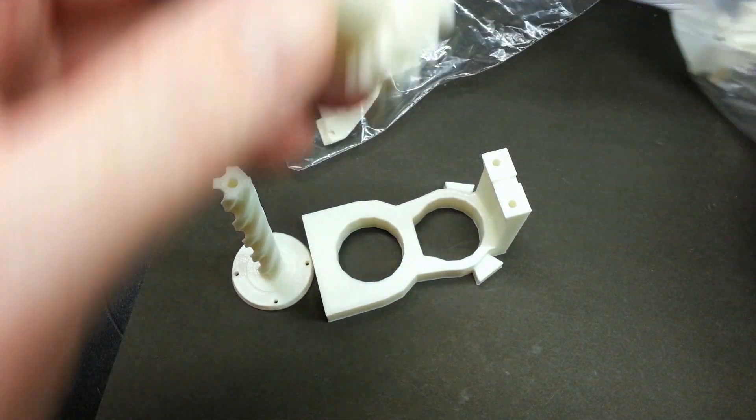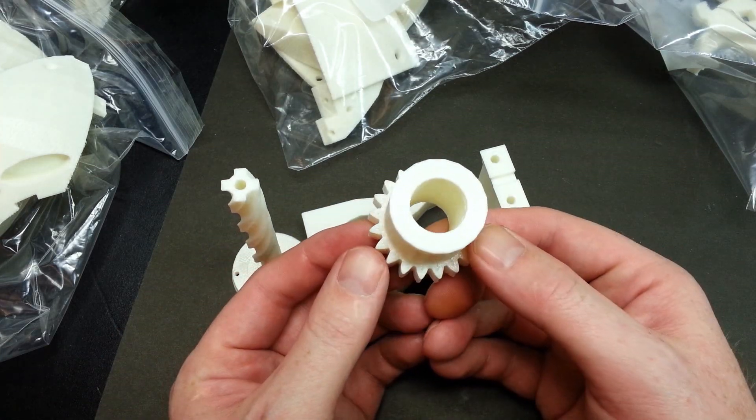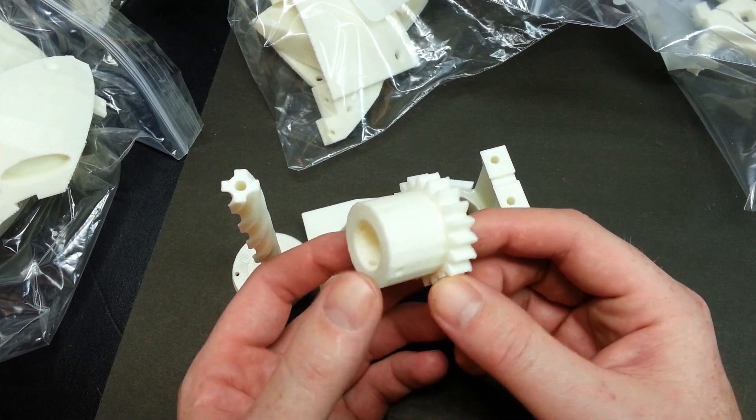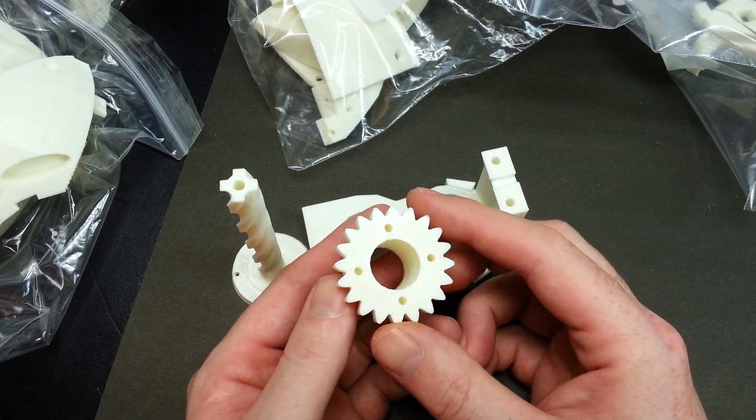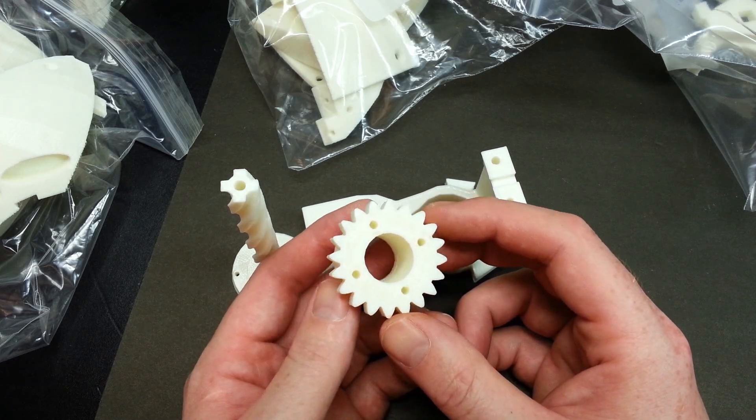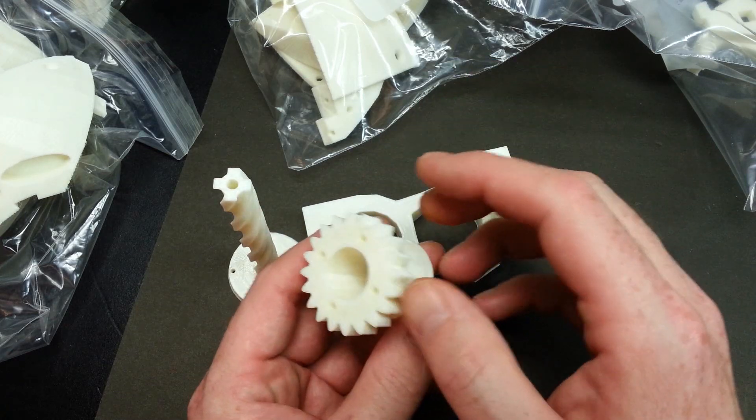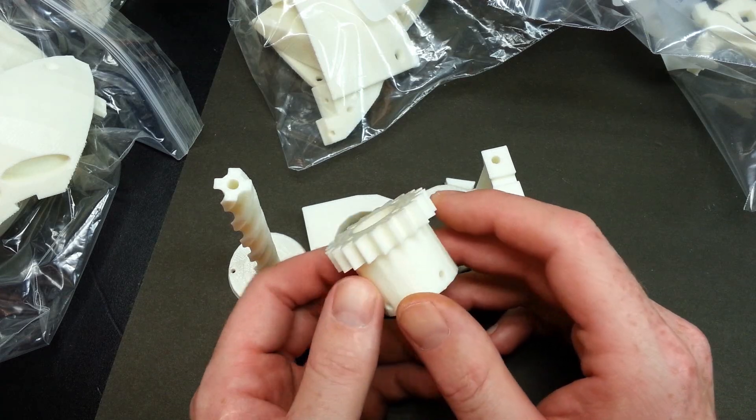And it also allows me to do a much better job on items like this. This is the gear that drives one of the neck mechanisms. I think this is the head pivot left to right. I could be wrong on that because I haven't started building it.